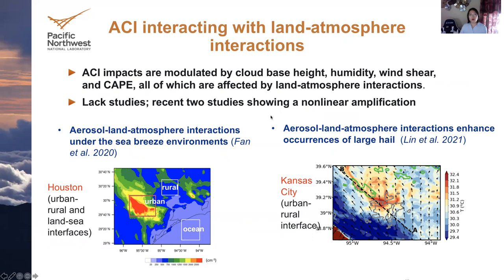Our recent two studies show that the interaction has a large nonlinear implication. One is the Houston case, where we have urban-rural and land-sea contrast. The other is about Kansas City urbanization and how it interacts with the aerosol impact on severe hail.